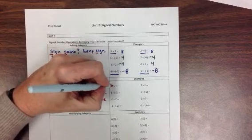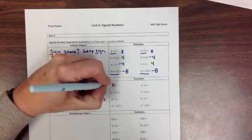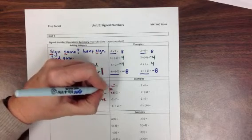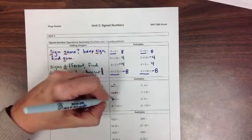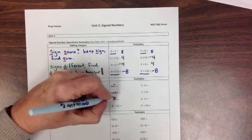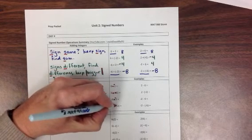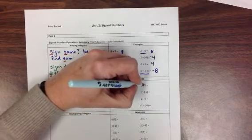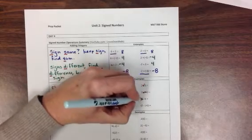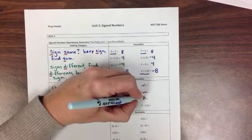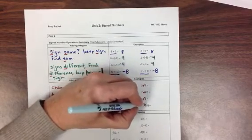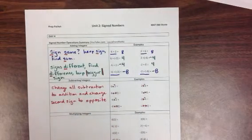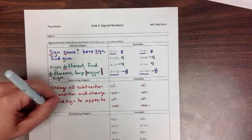We're going to take all of these subtraction problems, turn them into addition problems, and then change the sign of the number after it. So 6 minus 2 becomes 6 plus negative 2. And 6 minus negative 2 becomes 6 plus positive 2. Here we have a plus negative and a plus positive, a plus negative, a plus positive, a plus negative, and a plus positive. Now that they are addition problems, we're going to follow the rules for addition.